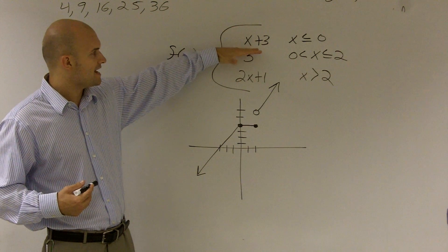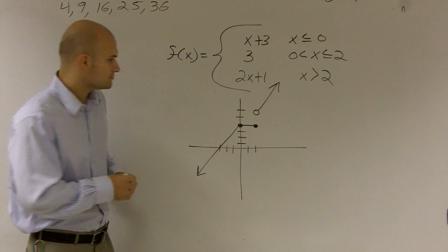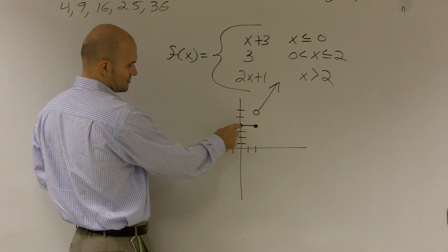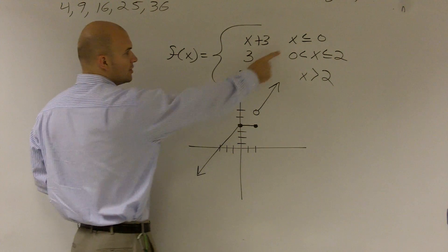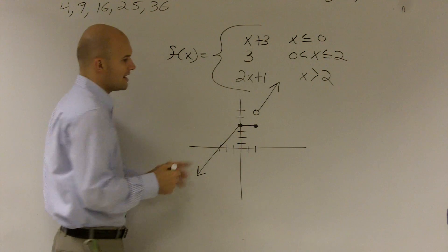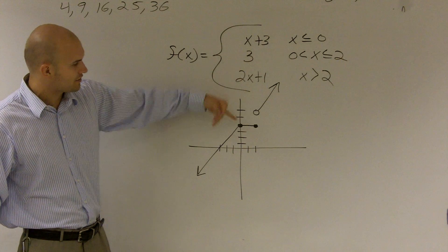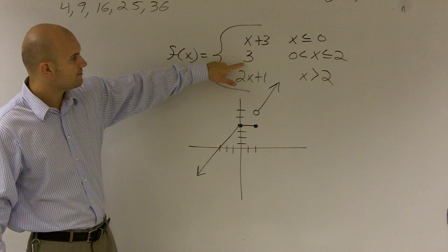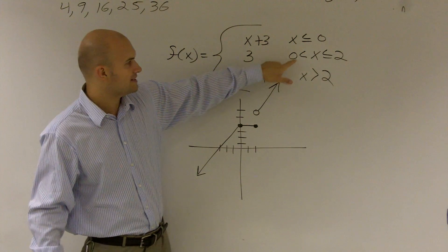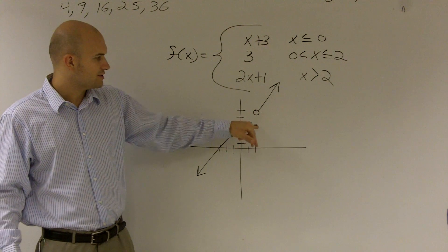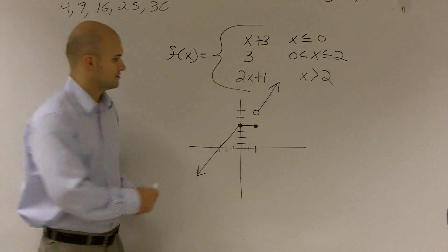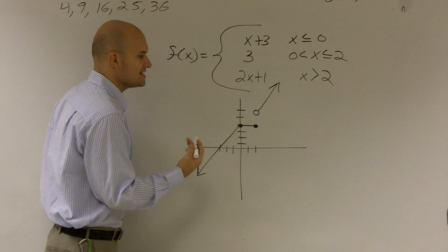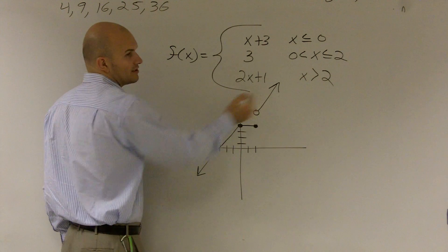So this graph, which is x plus 3, is only true when x is less than or equal to 0. That's why it's only defined when the x values are less than or equal to 0. The function 3 is only defined between 0 and 2. And then we also have another function, 2x plus 1, that's only defined for all values that are greater than or equal to 2.